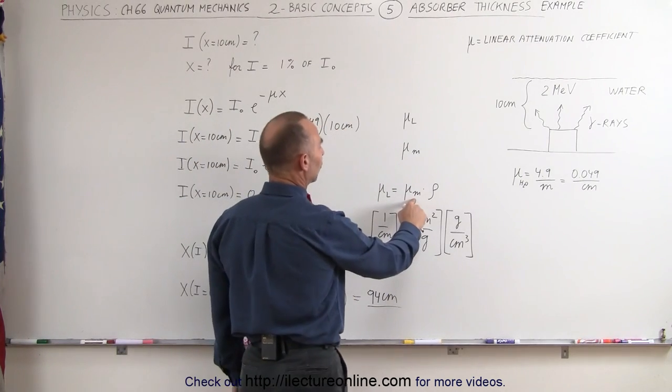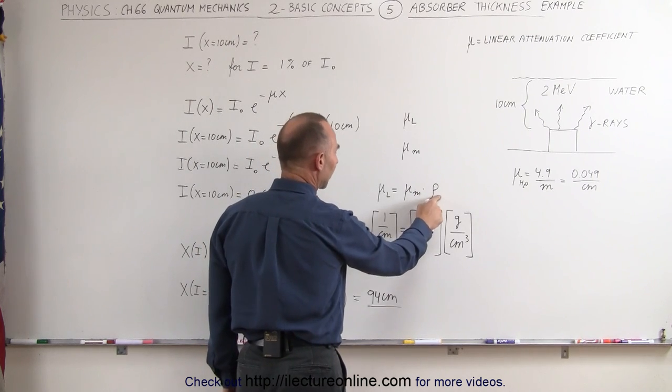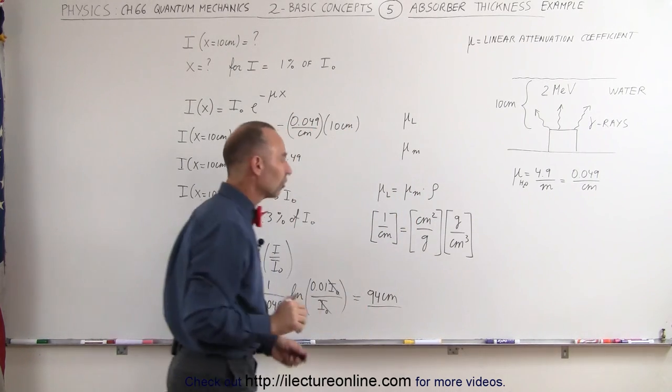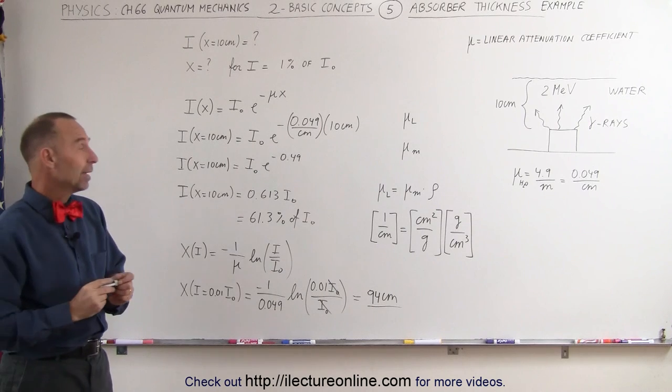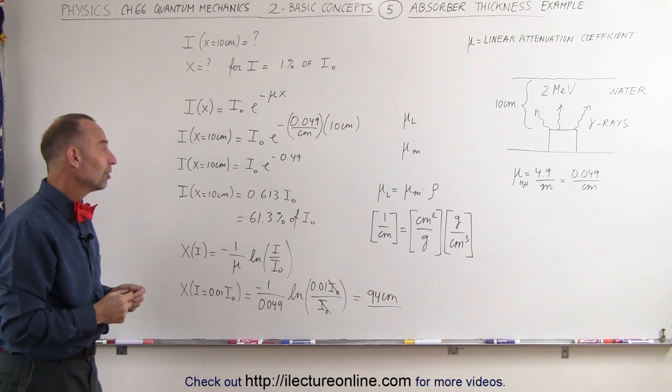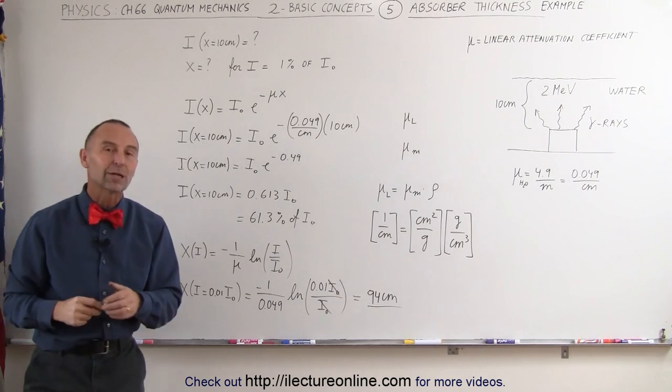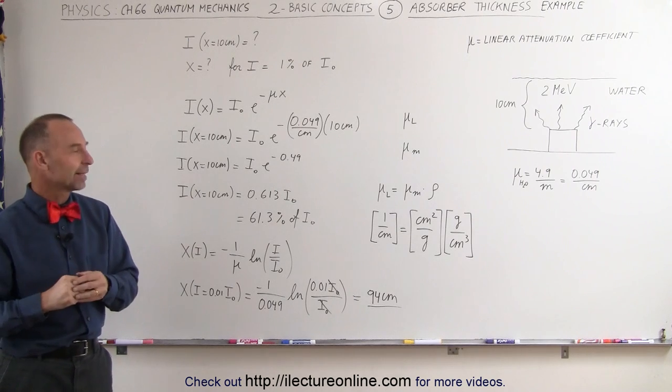Look up the mass attenuation coefficient, multiply times the density, and that gives you the linear coefficient. And that way you can solve the problems using these equations when you convert these coefficients like that. That's how we do that.